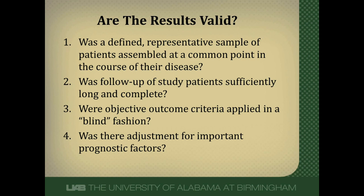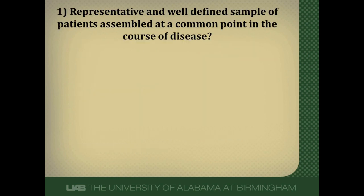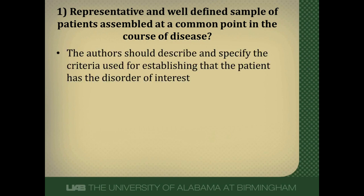When you read a prognostic study, there are four questions you need to ask yourself and determine how many of them are satisfied by the researchers. Number one: was there a representative and well-defined sample of patients assembled at a common point in the course of disease? The authors need to have explicit diagnostic criteria so we know exactly what disease we're dealing with.